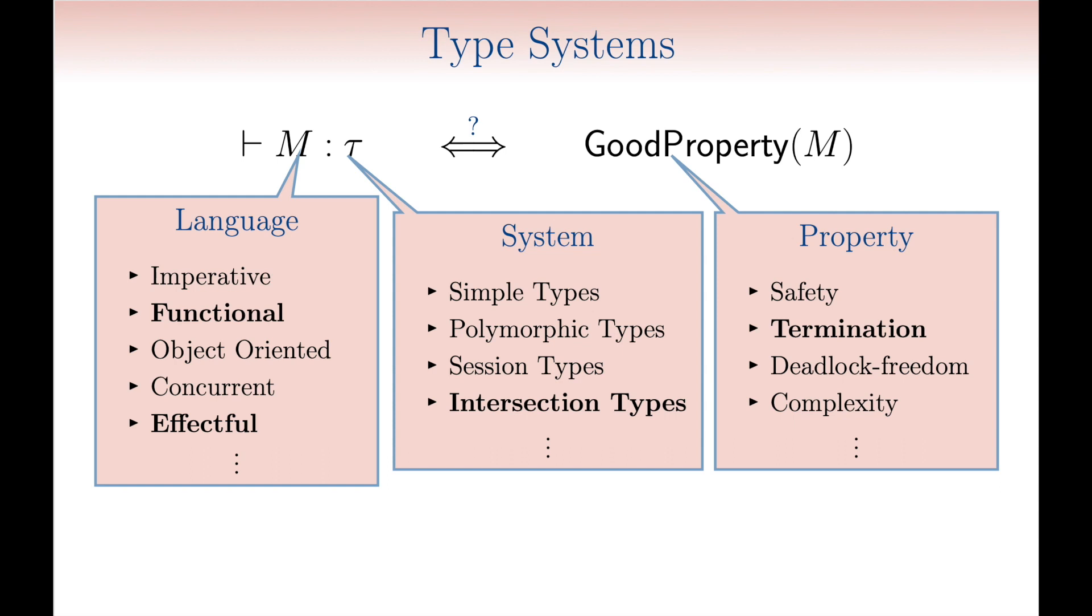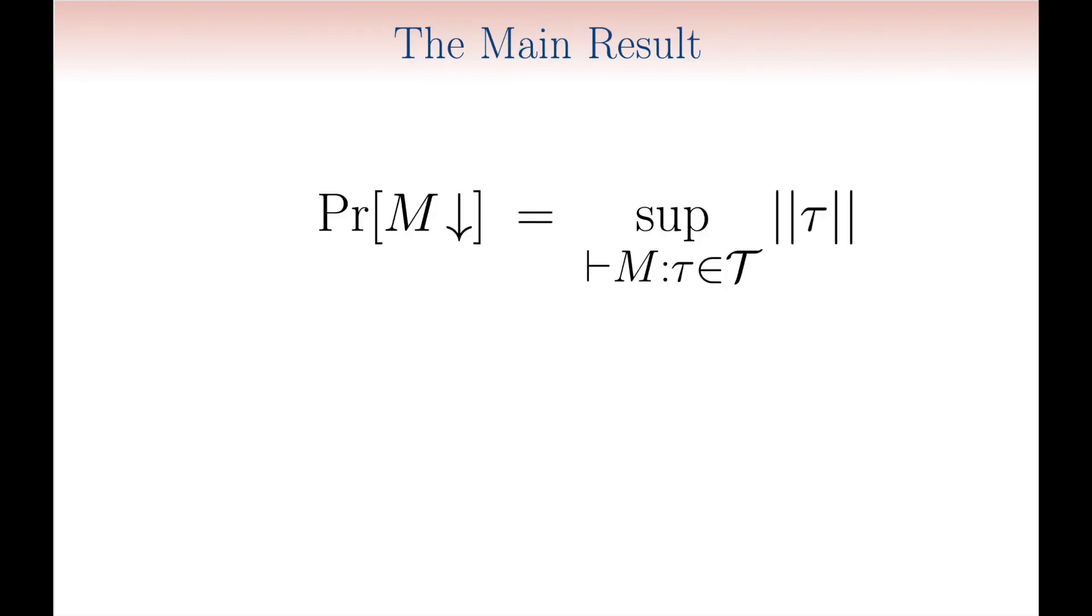As is well known, intersection types are sound and complete for termination. We answer this question affirmatively, by proving that termination precisely corresponds to typability.